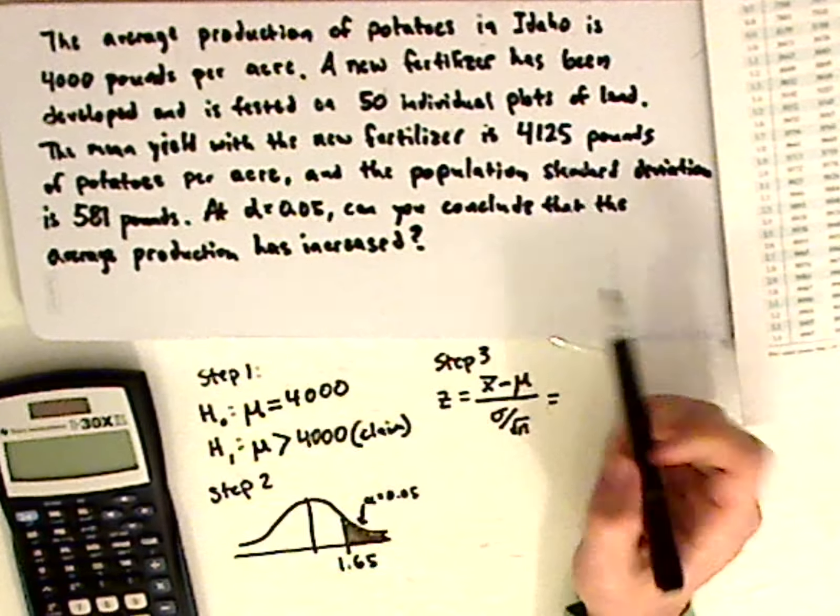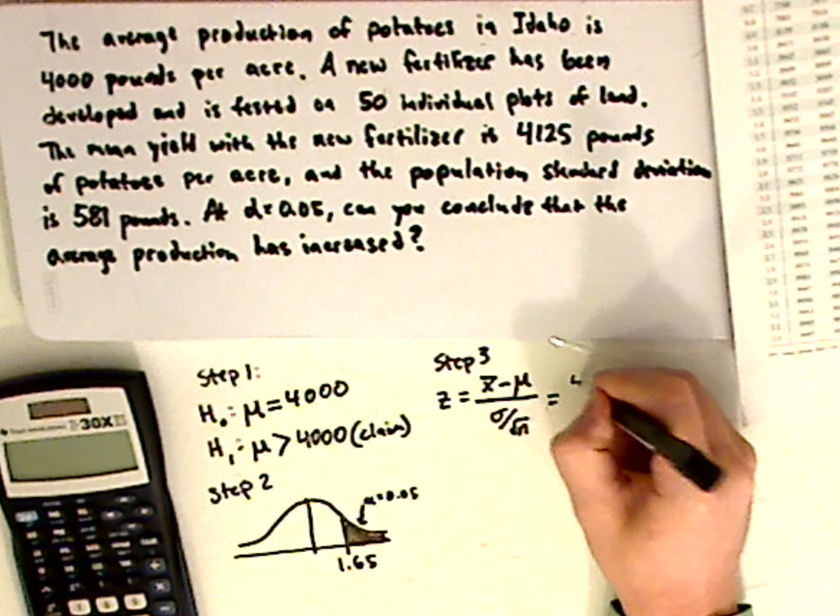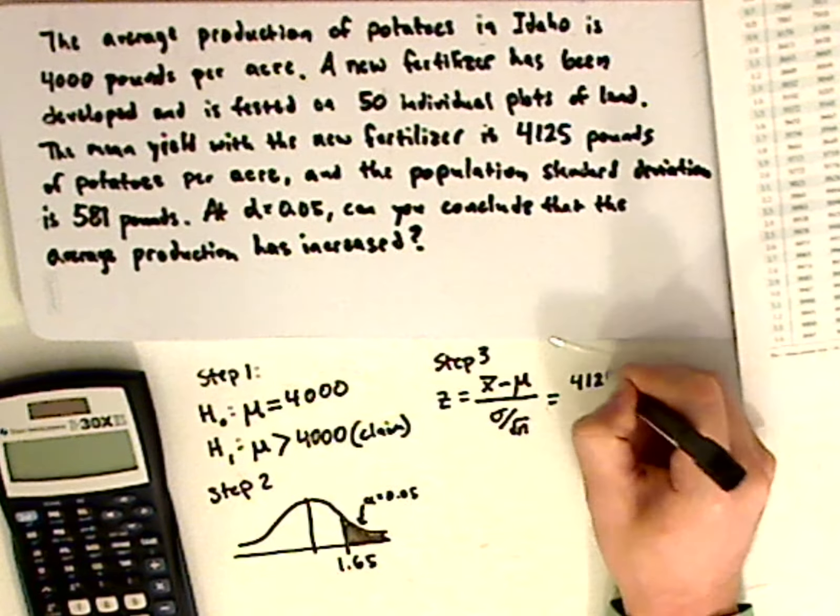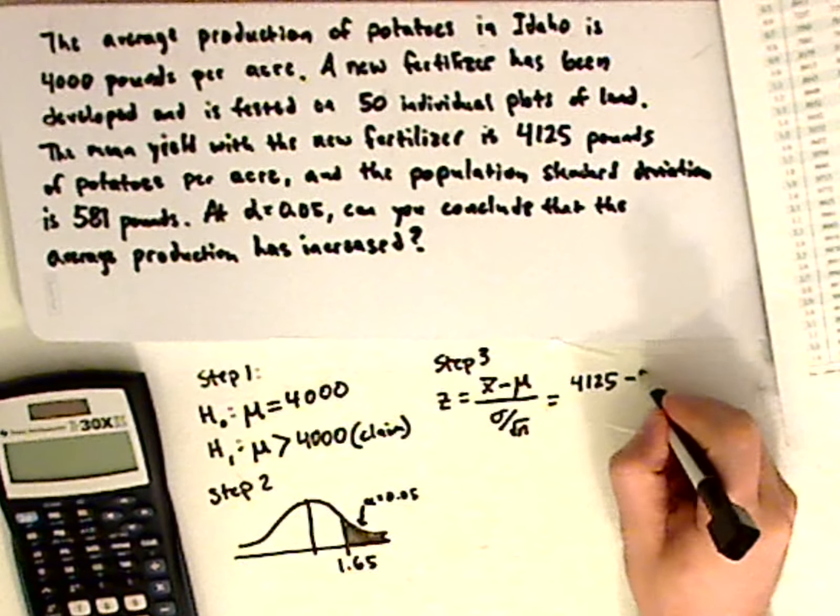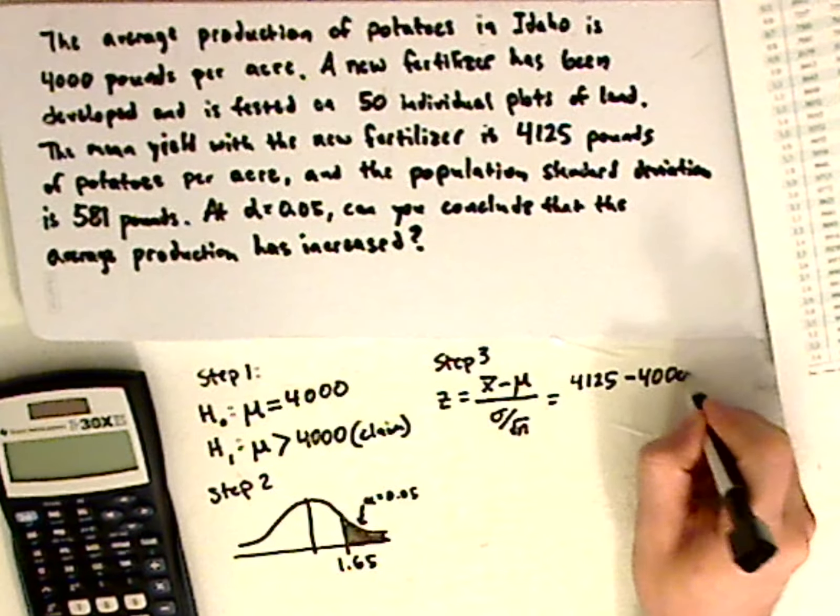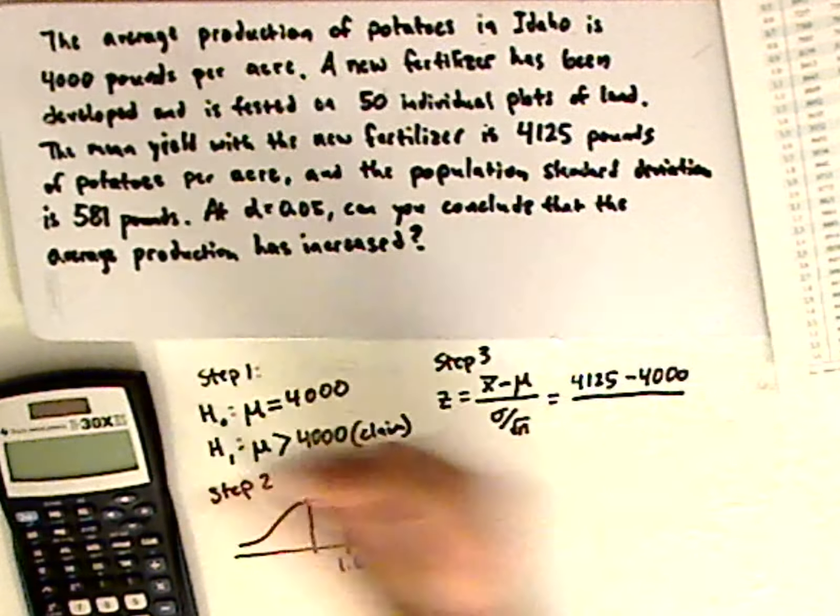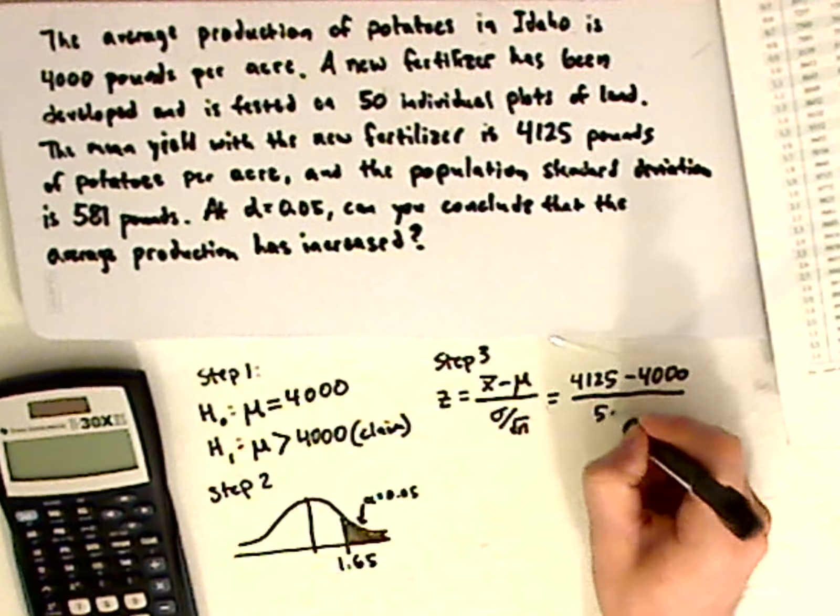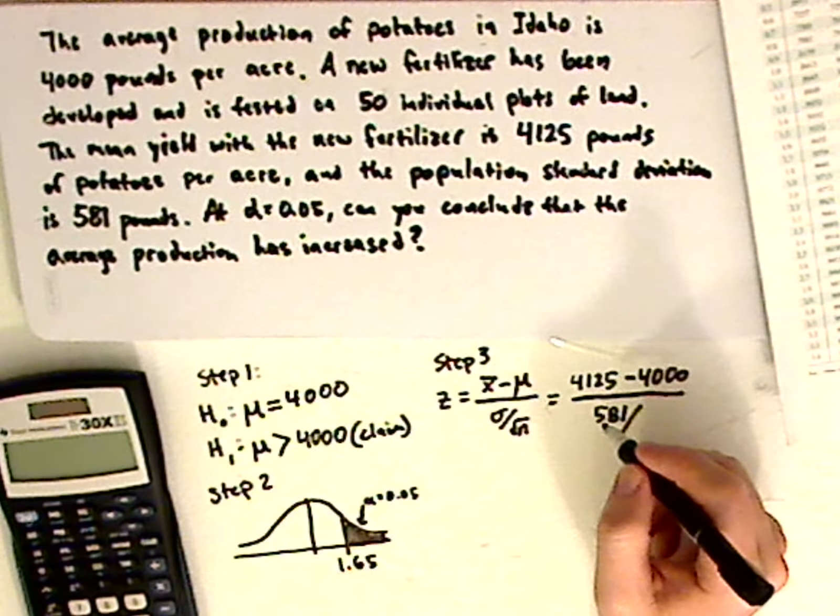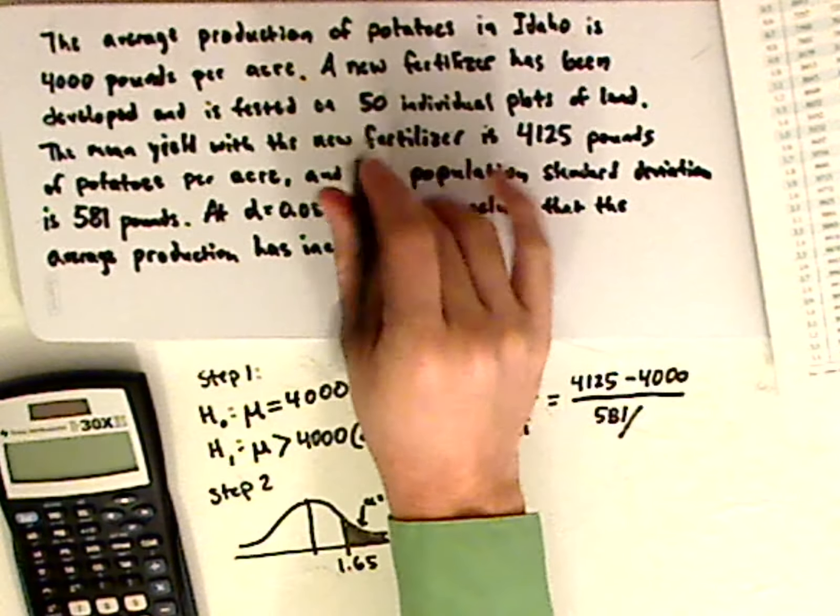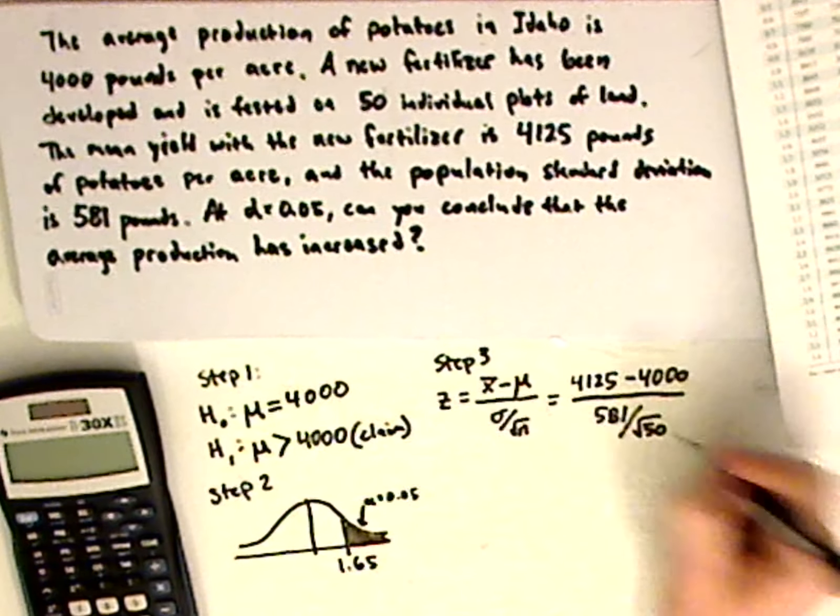So you plug everything in. The mean of the sample would be 4,125 minus 4,000 over your standard deviation of the population, which is 581 divided by the square root of n. And n is your sample size. Here, it's 50. So it would be the square root of 50.